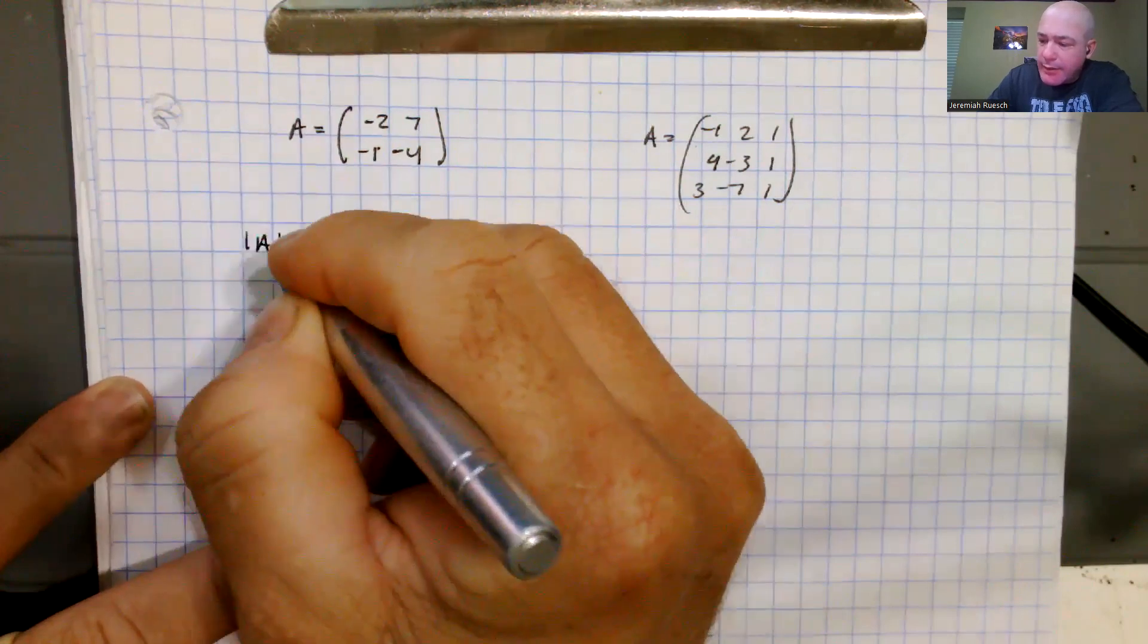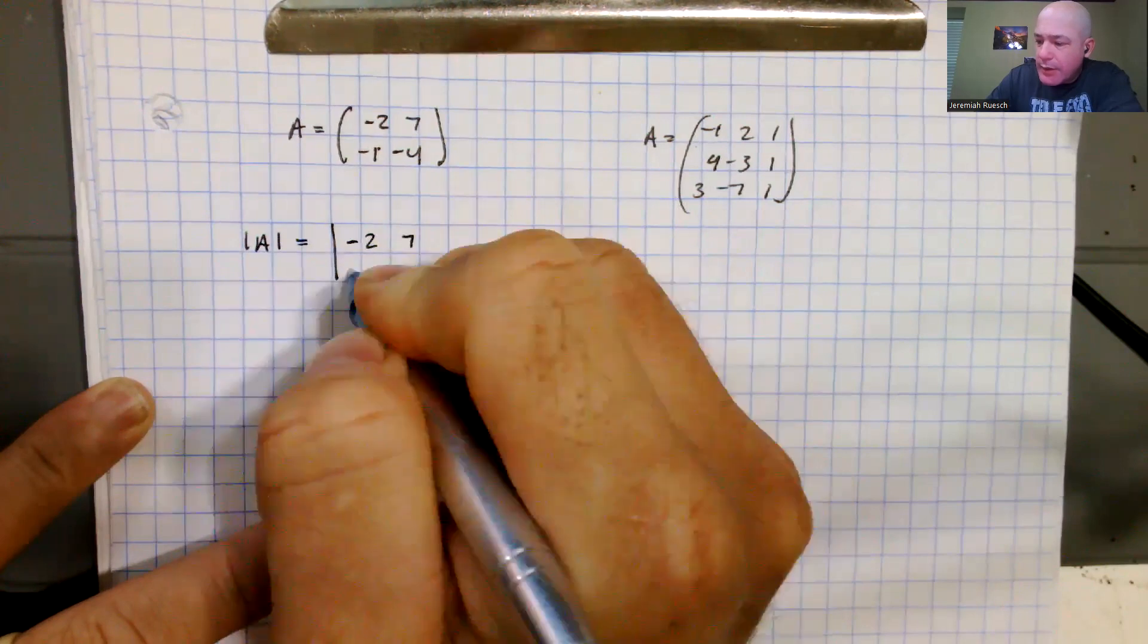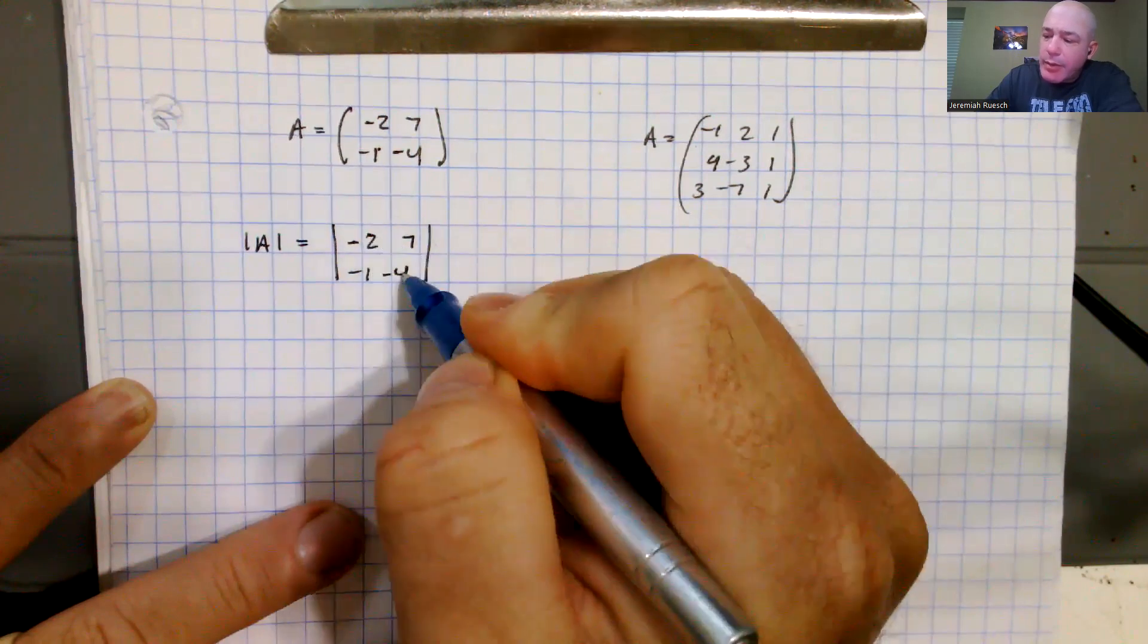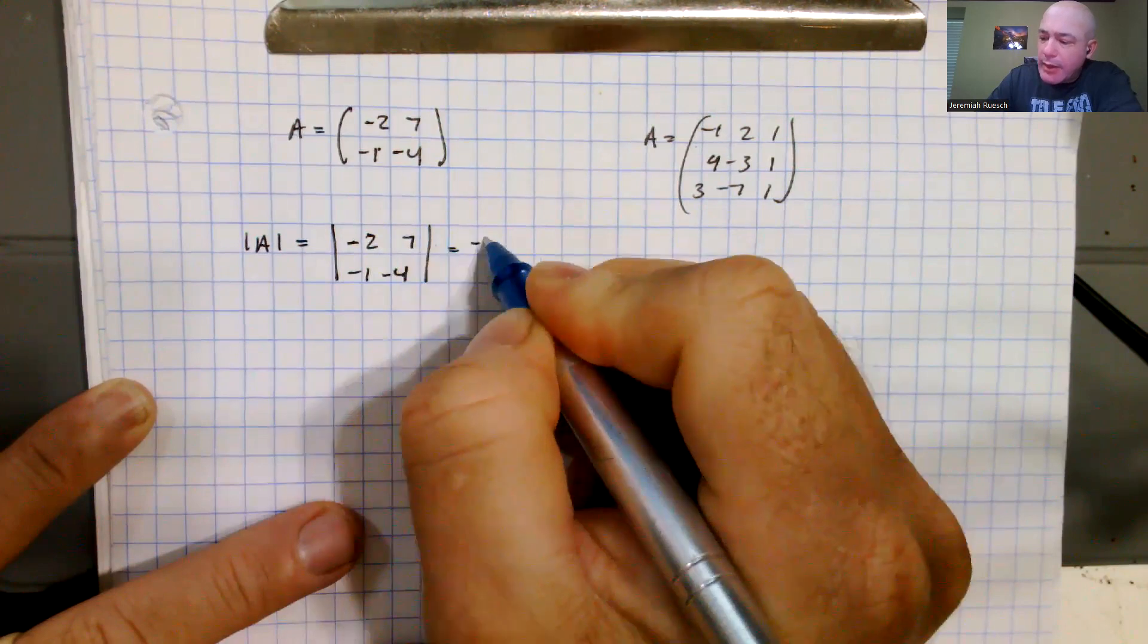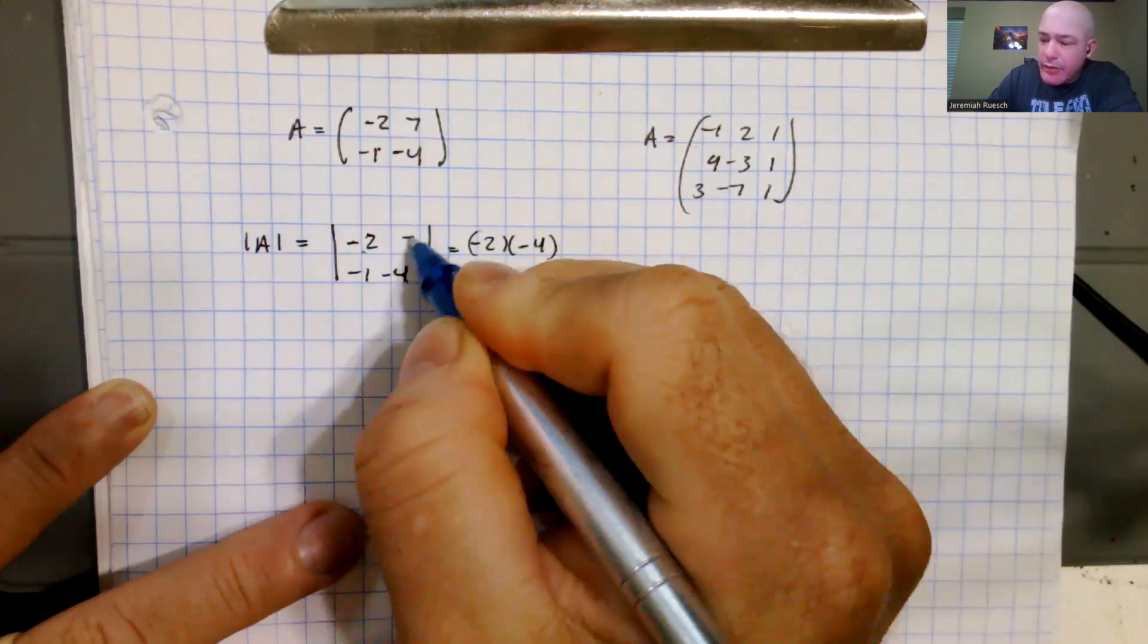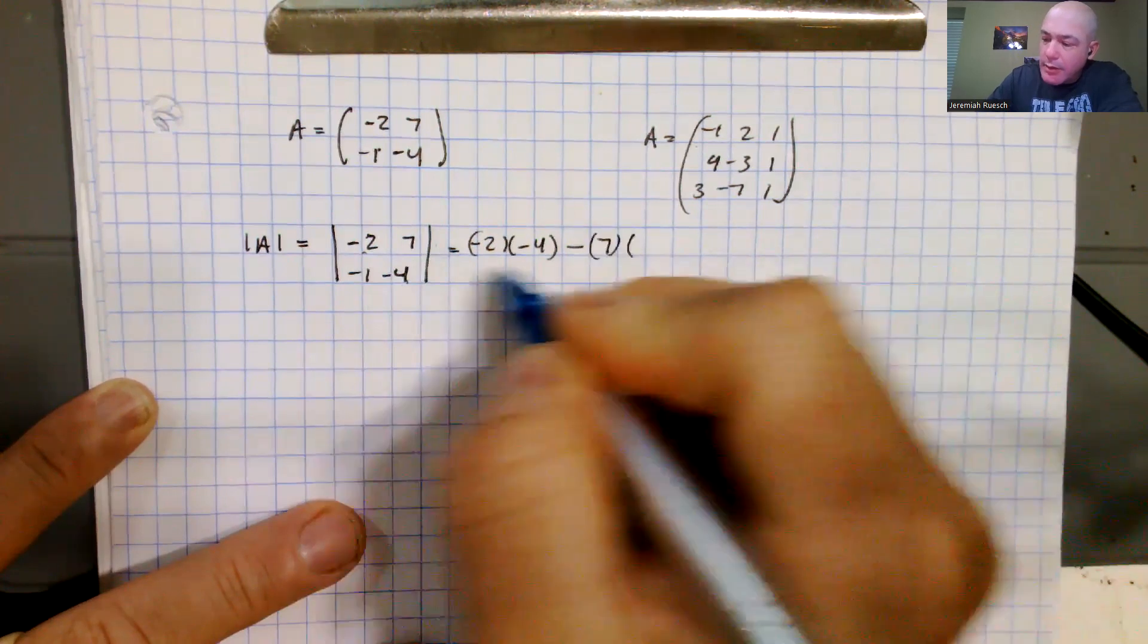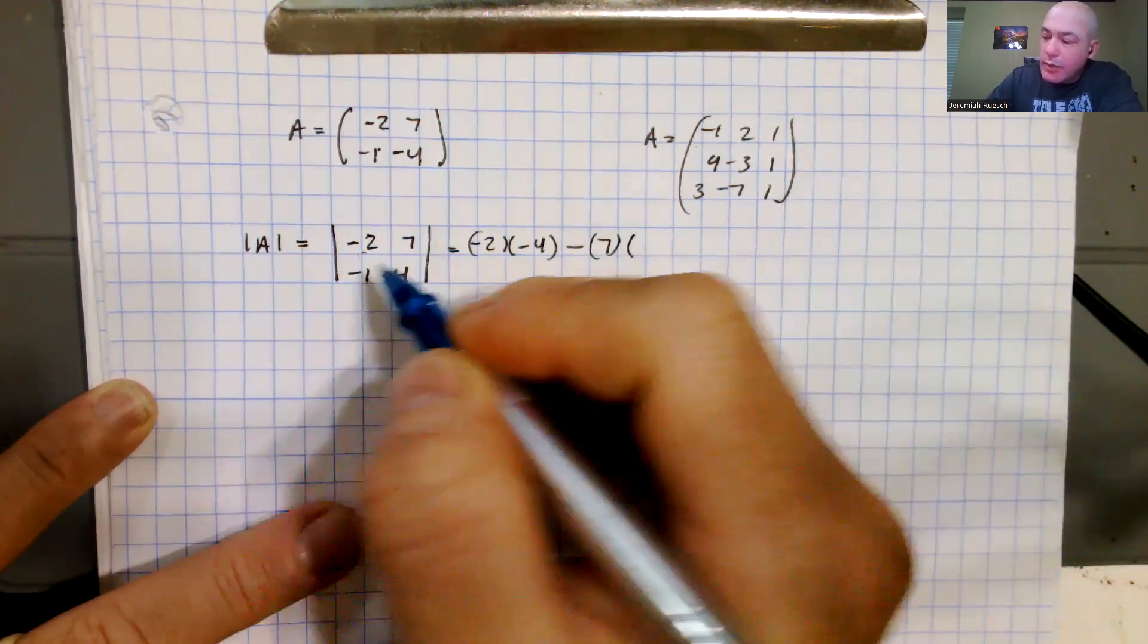So the determinant of A in this case that we're looking at, we would write as negative 2, 7, negative 1, negative 4, and so it says take A1,1, and multiply it by A2,2, so we're going to have negative 2 times negative 4, and we're going to subtract from it the product of A1,2 with the result of A2,1.